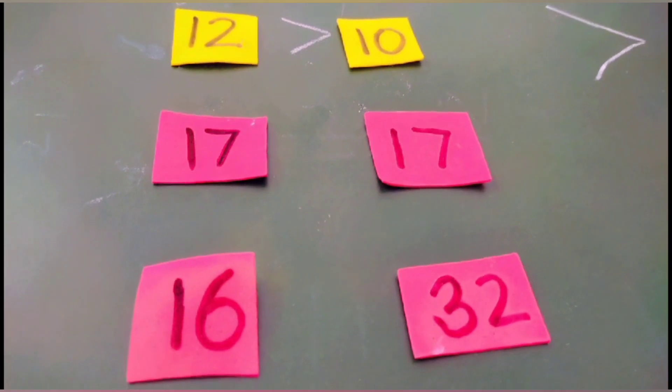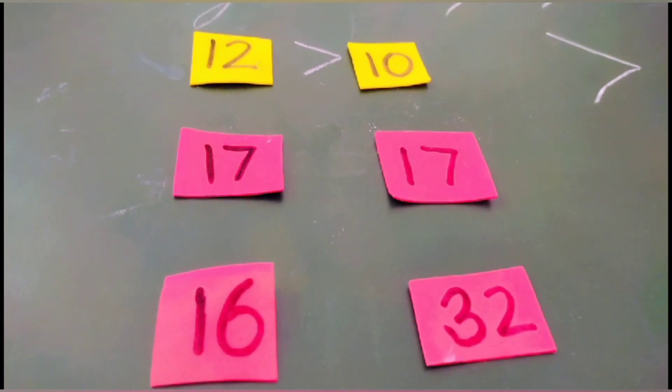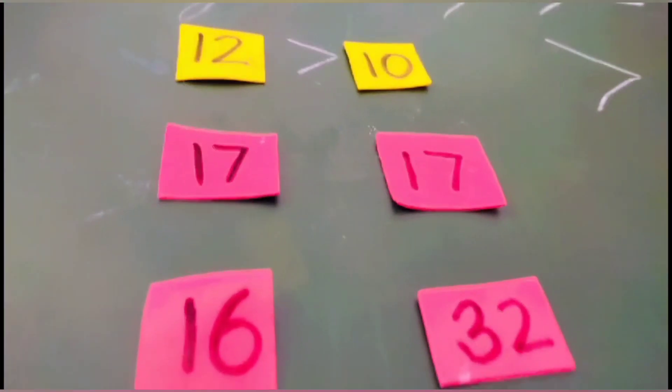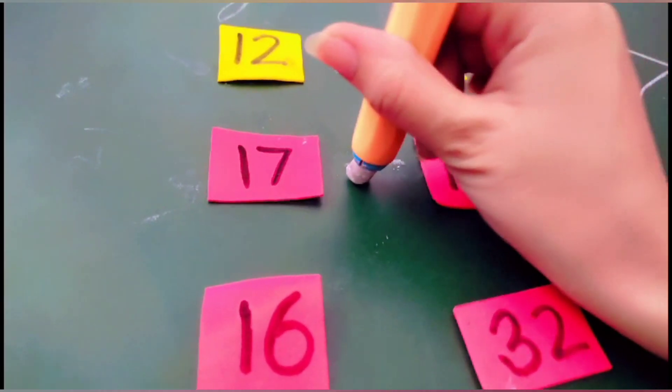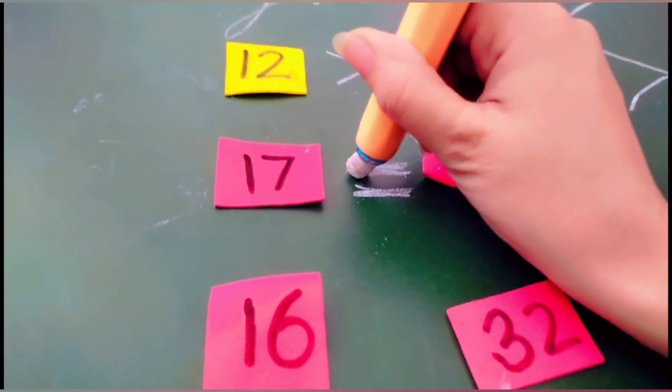We have same number 17, 17. Now we will use sign of equals, equals to. 17, 17, they both are equal. So we will use sign of equal to, horizontal signs.